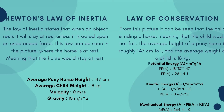Next is kinetic energy, which has the formula of one-half times mass times velocity squared. From that, we are able to find the kinetic energy of 0 m/s². Now, we have found the potential energy as well as the kinetic energy. The mechanical energy has the formula of potential energy plus kinetic energy, giving us a mechanical energy of 264.4 joules.